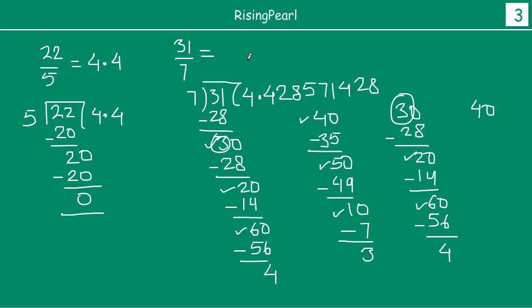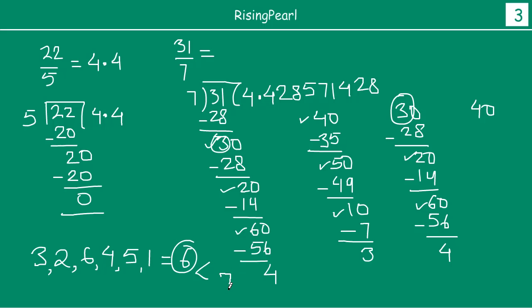So when we get 30, the string of remainders that is repeating is: 3, 2, 6, 4, 5, 1, and again 3. So we notice there are 1, 2, 3, 4, 5, 6 — the count is 6. And 6 is less than 7, which is the divisor. We noticed that at 30 we had 28, that is 4, so 4 started repeating again, from 4 all the way till 1, it is again repeating.